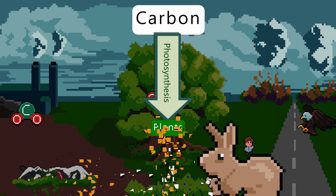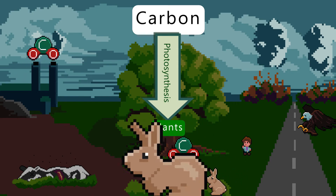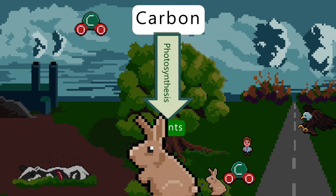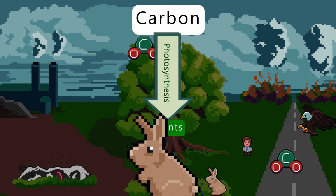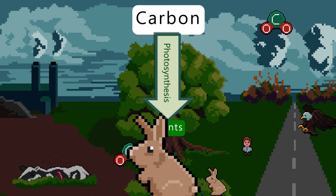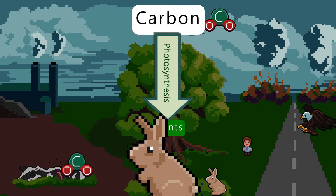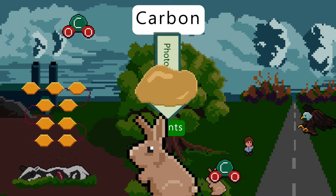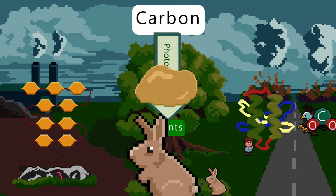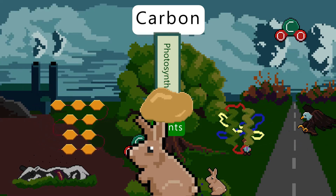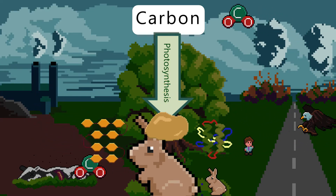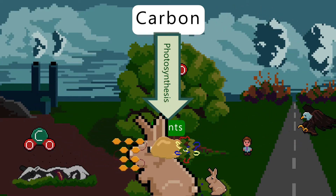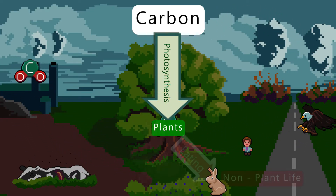Organisms then consume the plants and the carbon becomes incorporated into their cells and tissues. Carbon is found in carbohydrates, fats and proteins, and this is the general way carbon is incorporated into life on earth.